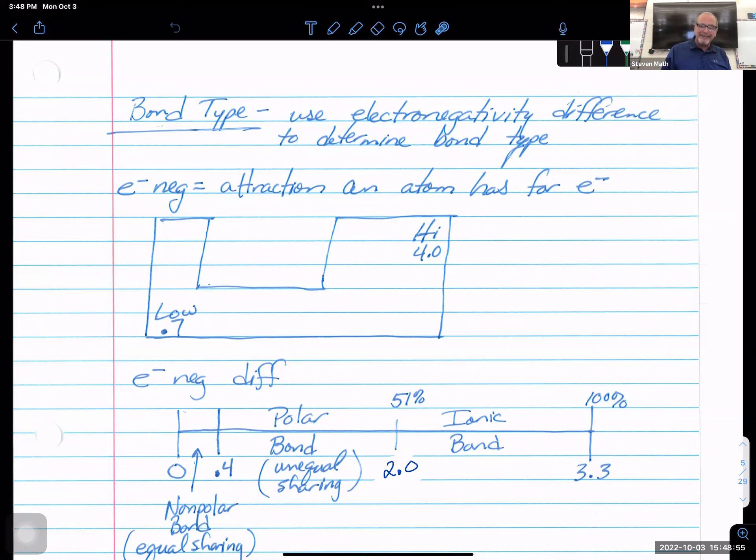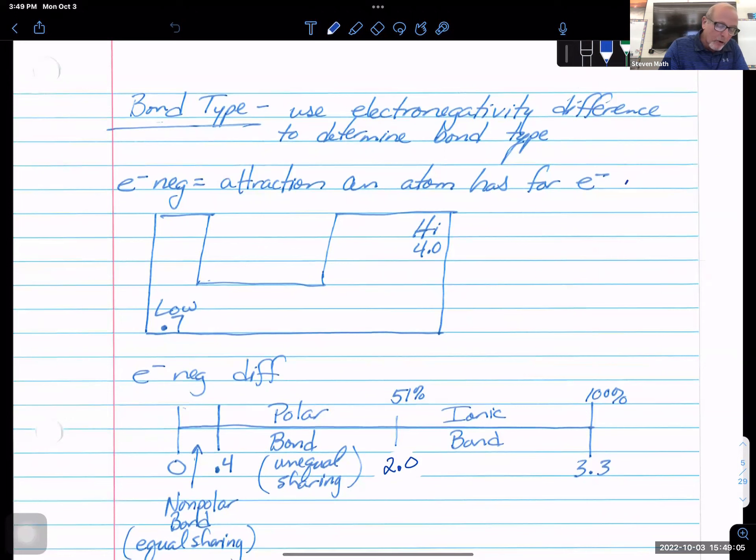And what this electronegativity trend is, is an attraction an atom has for an electron. Now, the caveat to that is when it's covalently bonded.